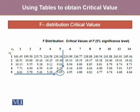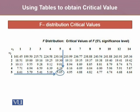Another commonly used distribution is the F distribution, which has two degrees of freedom: ν₁ and ν₂. At 5% significance level with ν₁ = 5 and ν₂ = 5, the critical value is 5.05. For the F distribution, there is a separate table for each significance level — 5%, 10%, 1%, and so on.